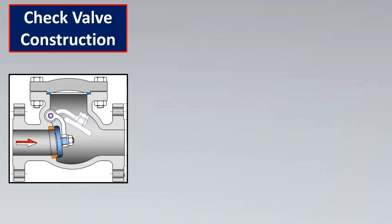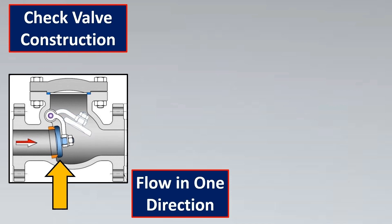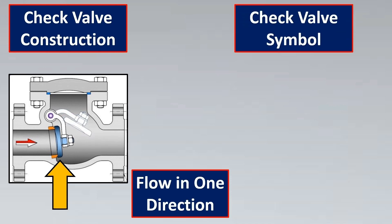Now let's look at the check valve — one of the most widely used valves. The construction is very simple: there is a check valve vane which will close, and flow coming through tries to open it and passes through. But if the flow goes in the opposite direction, the vane will close and it will not allow flow to go back. So basically a check valve allows flow only in one direction.